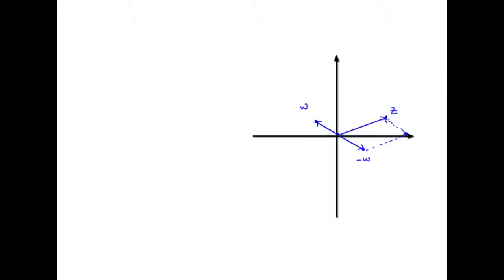If we're wanting z minus w, then we would complete this parallelogram. z followed by minus w — that journey from there to there is the same as the journey from the origin out to minus w. So z followed by minus w will get us to the complex number z minus w, and the associated vector with that would be that line there.